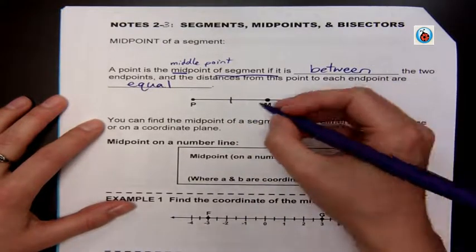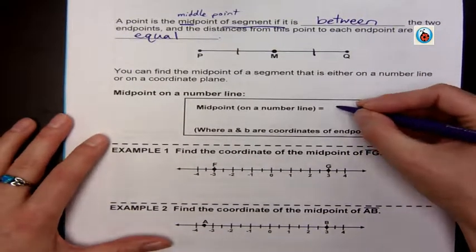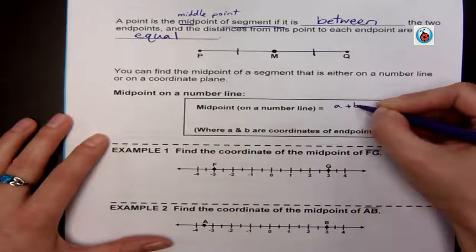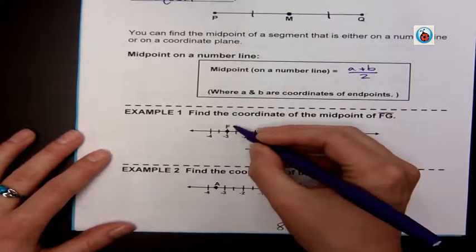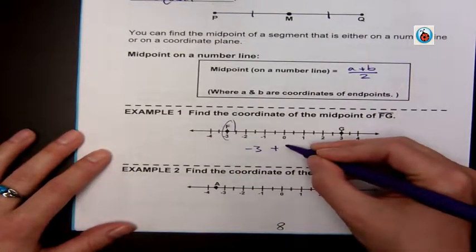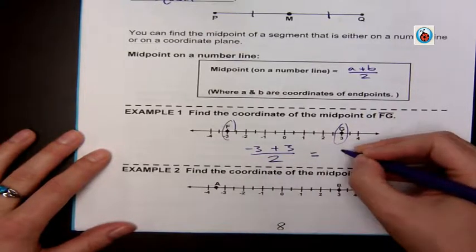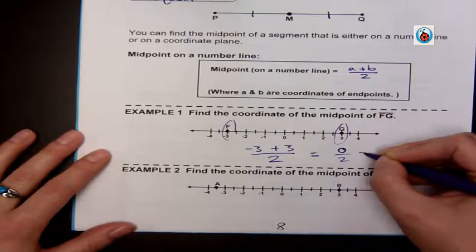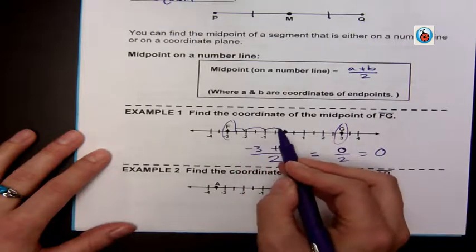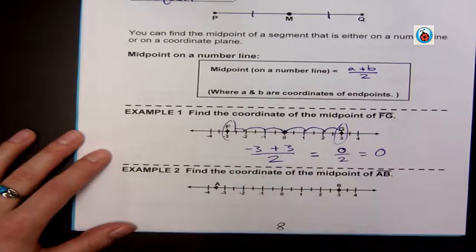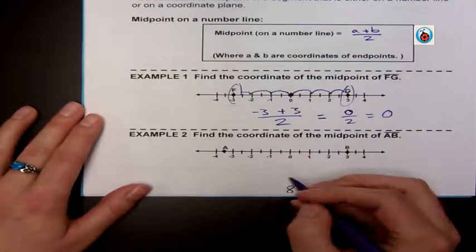If we're finding it on a number line, the midpoint is just we add the two endpoints and divide by two. Really simple. So here we have negative 3 plus 3, which is 0, divided by 2, which gives us 0. Then we can check: one, two, three this direction, one, two, three that direction. Nice and easy.